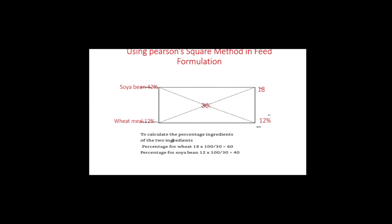We are going to choose two ingredients, each with the right proportion of crude protein. The ingredients I have chosen are soybean meal, because of its availability, and wheat meal, because it is used as a good energy source for catfish and also a good pellet binder. The soybean meal has 42% crude protein, the wheat meal has 12% crude protein, and today we are going to formulate a feed with 30% protein level.